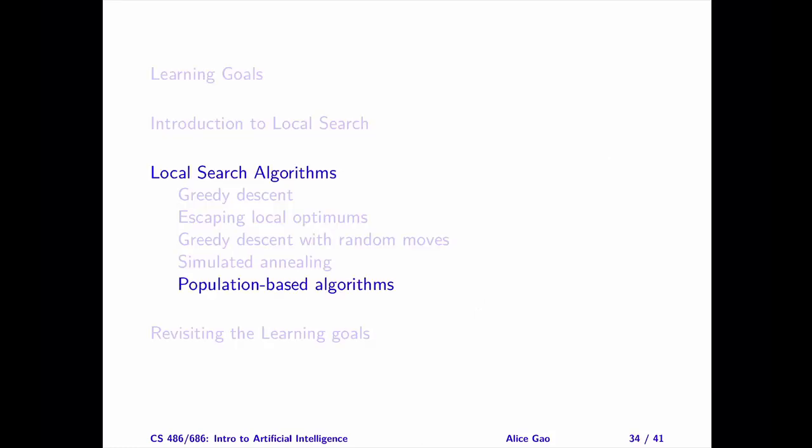That's everything on population-based local search algorithms. Let me summarize. After watching this video, you should be able to describe beam search, stochastic beam search, and the genetic algorithm; describe the properties of each algorithm; compare and contrast these algorithms; explain how each algorithm trades off exploration and exploitation; and explain how the algorithms borrow ideas from evolution and biology. Thank you very much for watching — I will see you in the next video. Bye for now.